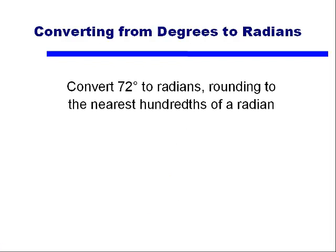You could however be asked to convert 72 degrees into radians, but with rounding. And in this case, they're asking us to round to the nearest hundredths of a radian. You would still use the same unit fraction. Again, we want our degrees to reduce out of the numerator and the denominator, leaving behind radians.